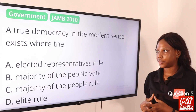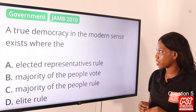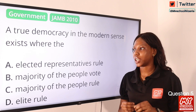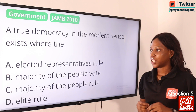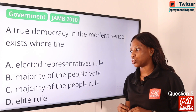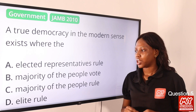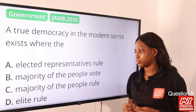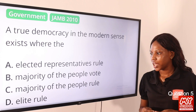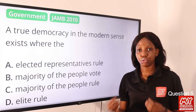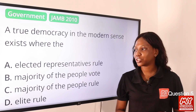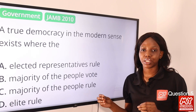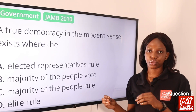Question 5: A true democracy in the modern sense exists where the — option A, elected representatives rule; option B, majority of the people vote; option C, majority of the people rule; option D, elite rule. The answer is definitely option A, elected representatives rule.